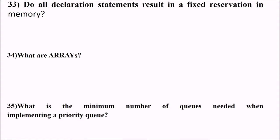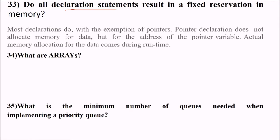33 is do all declaration statements result in a fixed reservation in memory? Most declarations do fix the reservation of memory, but with the exception of pointers. Pointer declaration does not allocate memory for data, but for the address of the pointer variable. Actual memory allocation will only be done at runtime. So runtime allocation is there.